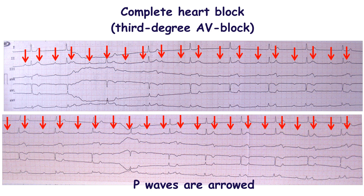There is no relationship between the P wave and the QRS complex. The QRS complex is narrow, so the ventricular rhythm originates from the AV node or bundle of His. If the QRS complexes are wide, the ventricular rhythm originates from the ventricles. Often, the P wave merges with the T wave and sometimes with the QRS complex.